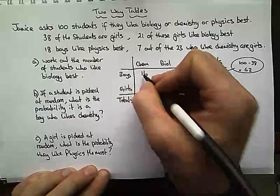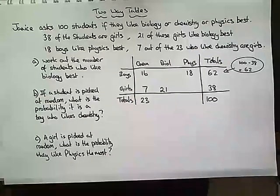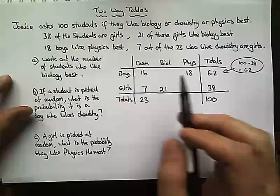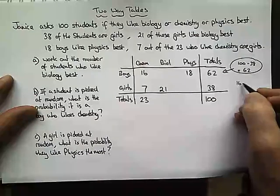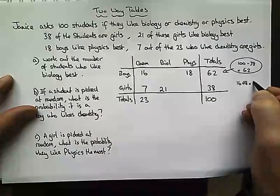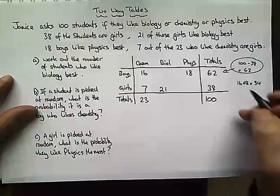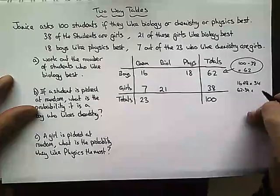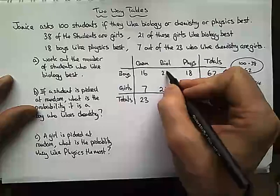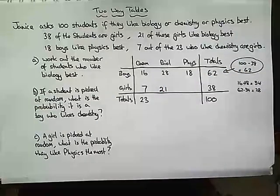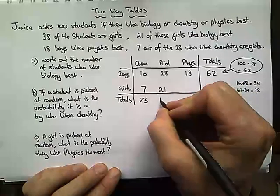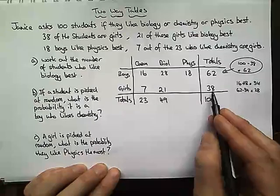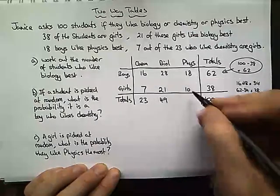If 7 of the chemistry students are girls, then 23 take away 7 gives us 16 boys who like chemistry. Now, 16 plus 18 is 34. 62 take away 34 leaves 28, so 28 boys like biology. 28 plus 21 is 49. 21 plus 7 is 28, take that away from 38, which must be 10 — so 10 girls like physics — and 18 plus 10 is 28.